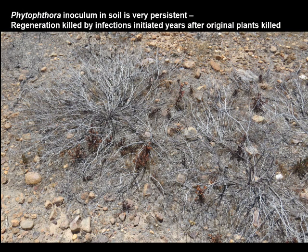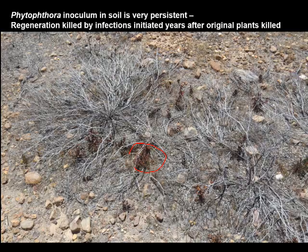Phytophthora inoculum in soil lasts for a long time. Once we have a plant that's killed, there are various types of resistance spores that can persist in the soil. Many of these areas don't regenerate with the susceptible species because they're killed by the residual inoculum. These dead seedlings are ones that came up, encountered inoculum, and then eventually died.